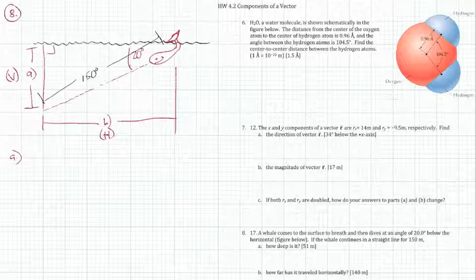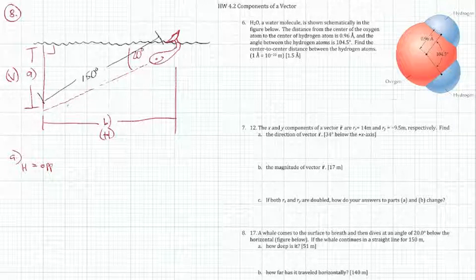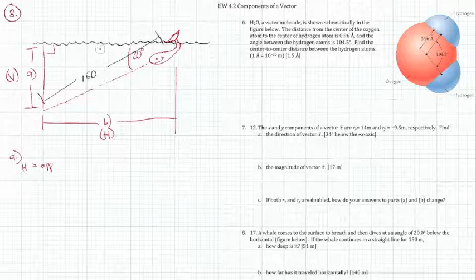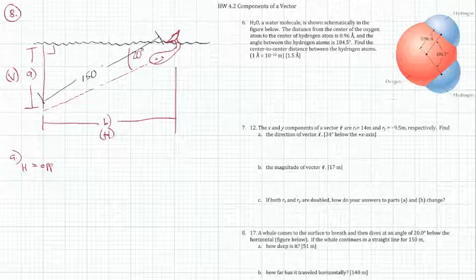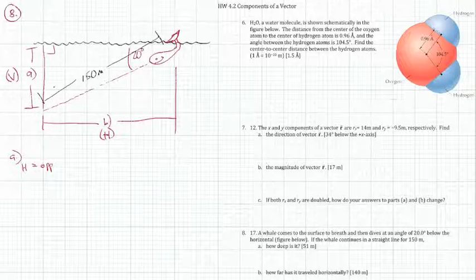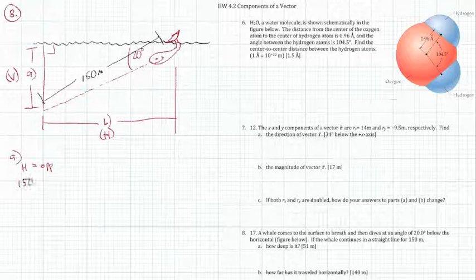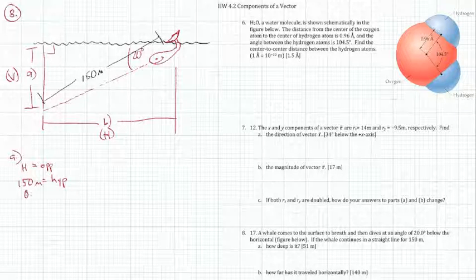We have an angle right here, and what we're trying to solve for is the side opposite the angle. And what do we know? What other side do we know? We know that the hypotenuse right here, 150—oh gosh, I wrote 150 degrees. That's not right, is it? 150 meters. Sorry about that. 150 meters is what we know. With this triangle, that's the hypotenuse, of course. So 150 meters is hypotenuse, HYP, and our angle in question, the one we're working with, is 20 degrees.